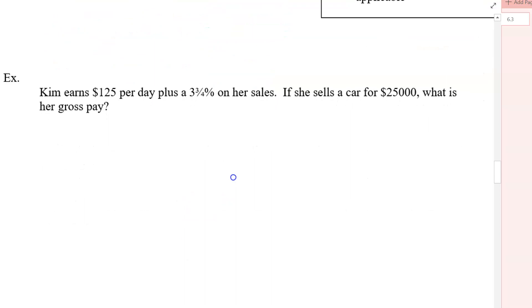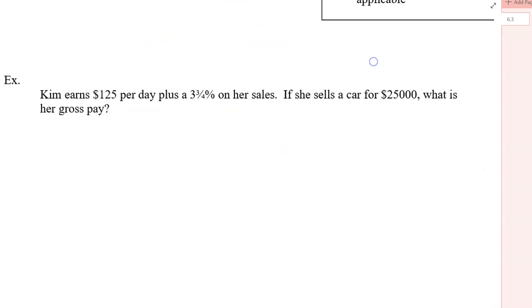All right. One last example. Kim earns $125 per day plus a 3.75% on her sales. If she sells a car for $25,000, what is her gross pay? Okay. So first of all, we know the step one part is the total sales. We know the total sales is going to be equal to this $25,000. But the percentage, it's a little bit harder now, isn't it? Because this is at 3.75%.